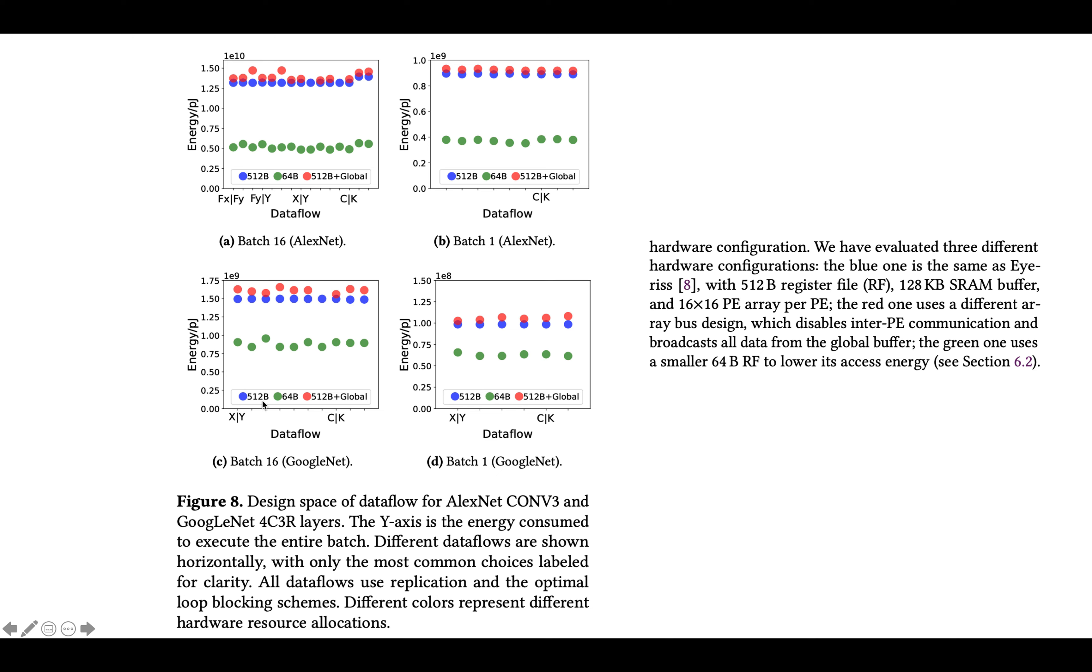And then these colored dots represent different memory hierarchy sizes. So 64 byte register file, a 512 byte register file, and a 512 byte register file plus a global buffer. And what you can see here is that for any given color, so for any given memory hierarchy setup